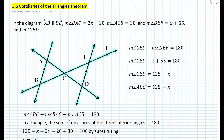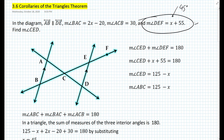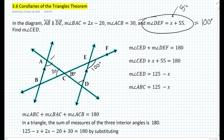Let's go back to our previous example to develop the second corollary. The measure of angle DEF — we never calculated its value, but since x equals 45, the measure of angle DEF is 100 degrees. We also know angle ACB is 30 degrees. The angle ABC is 70 degrees, and since we're dealing with alternate interior angles due to those two parallel lines, this angle also must be 70 degrees.